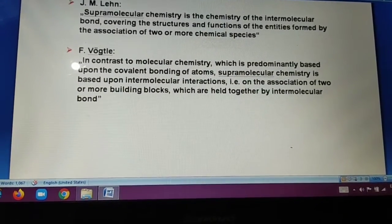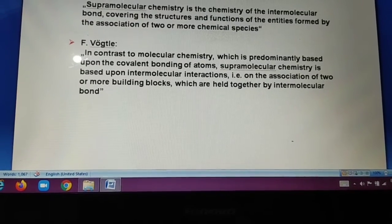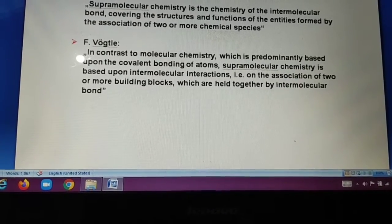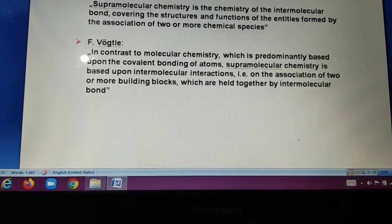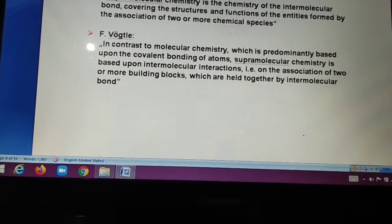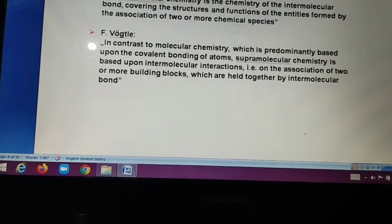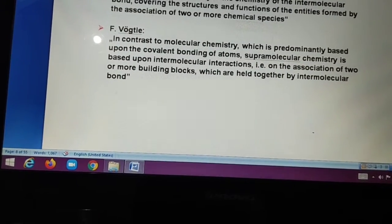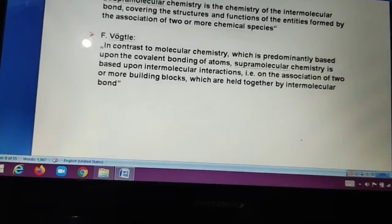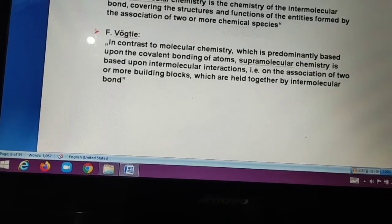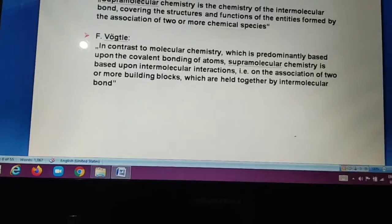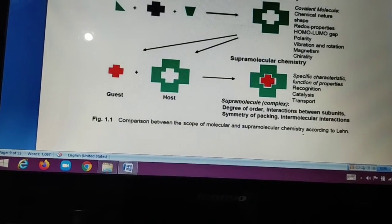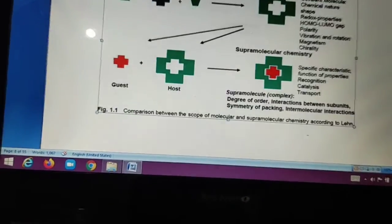According to F. Vogtle et al. In contrast to molecular chemistry which is predominantly based upon the covalent bonding of atoms, Supramolecular chemistry is based upon intermolecular interaction. It means on the association of two or more building blocks which are held together by intermolecular bond. Important this is according to Vogtle et al. That is on the association of two or more building linkage via an intermolecular bond. This bond may be hydrogen bond. Non-covalent bond.